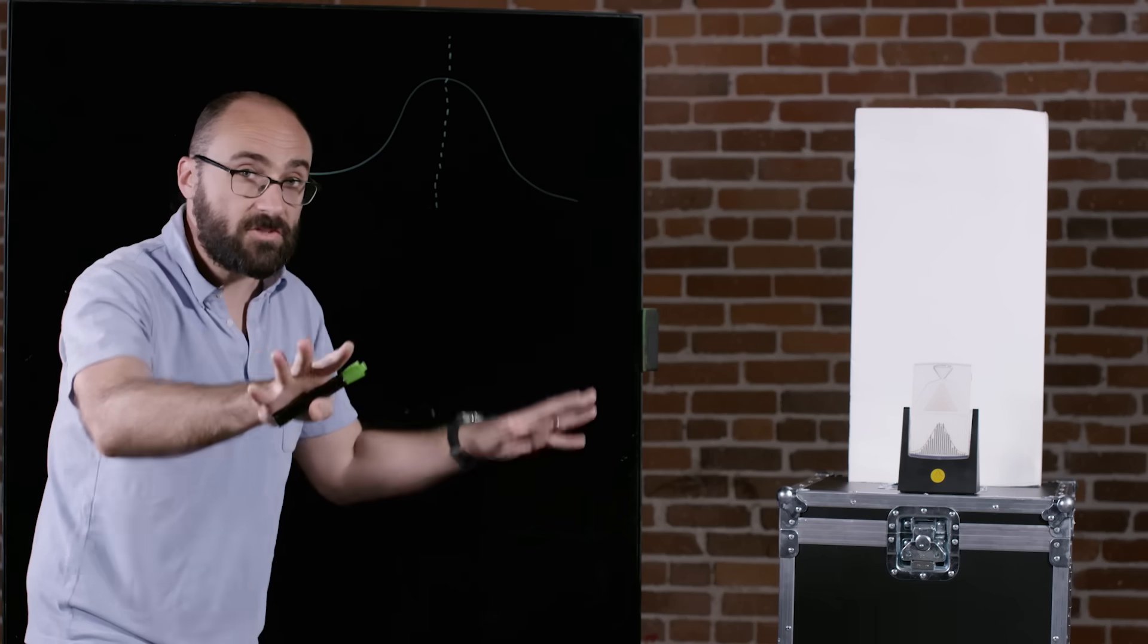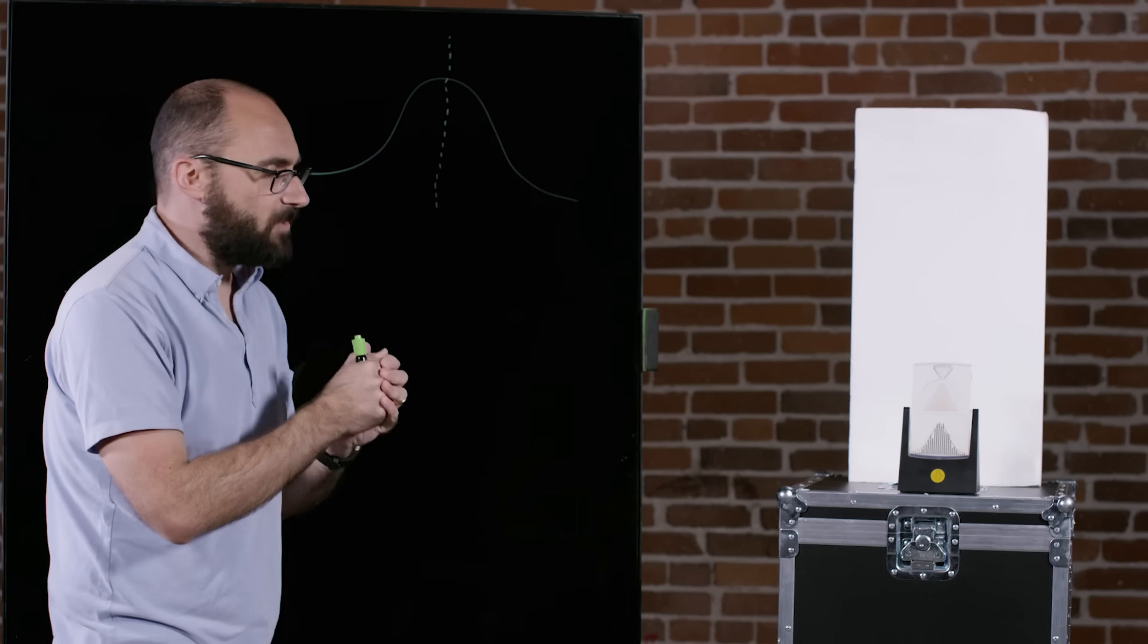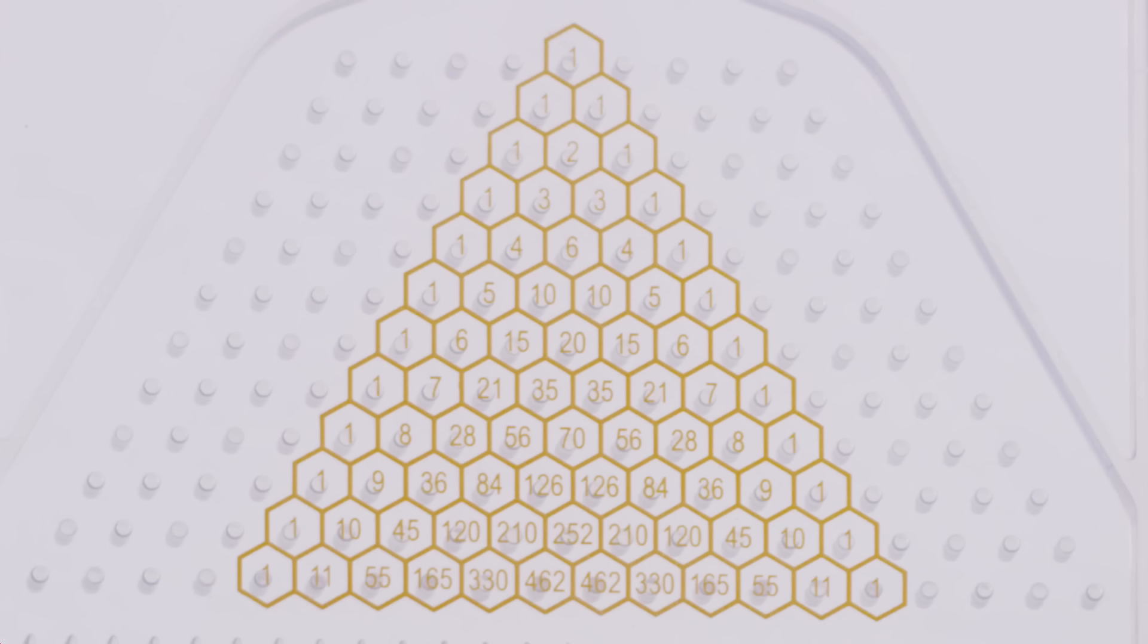Which is what you see drawn here on the board. But this Galton board doesn't just demonstrate the central limit theorem. It's got a bunch of other cool features. For instance, look carefully at the pegs. You'll see a hexagonal tiling with numbers. That is Pascal's triangle.